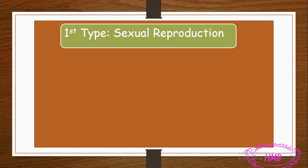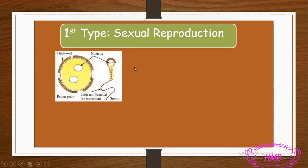Now let's discover the types of reproduction. We will talk about the first type, which is called sexual reproduction. Let's see why it's called sexual and what we mean by sexual reproduction.